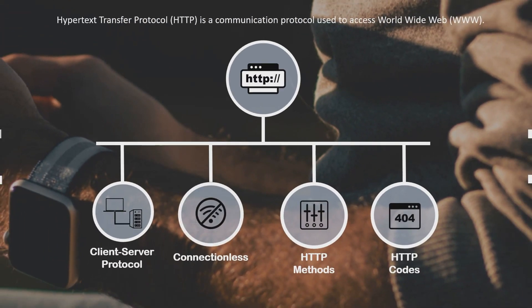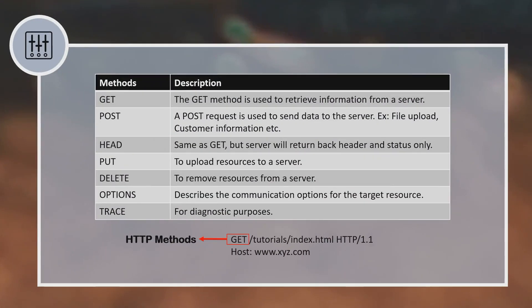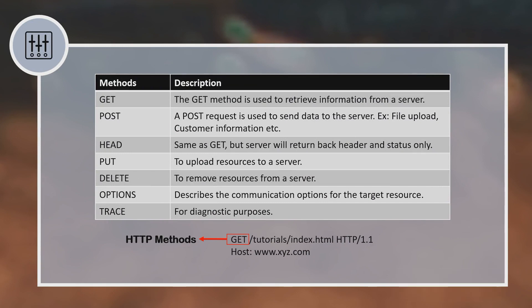Next, we will look into the HTTP methods. As mentioned before, whenever a client sends an HTTP request to the server, it includes the type of action it wants to perform — that is basically the HTTP method. These are some of the common methods used in HTTP requests. The first one is the GET method. GET is used whenever you want to access any web application. For instance, whenever you access facebook.com, your browser is sending a GET request to the server — it is used to retrieve information from the server.